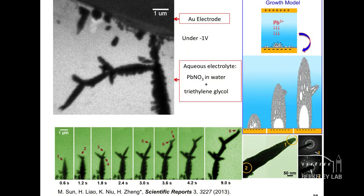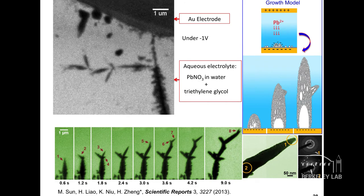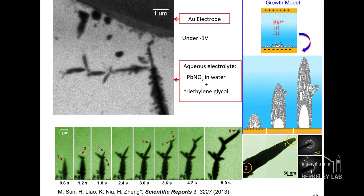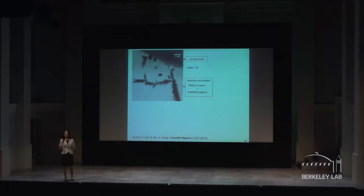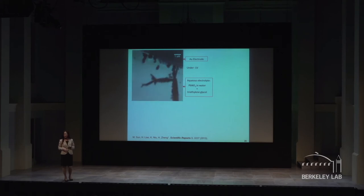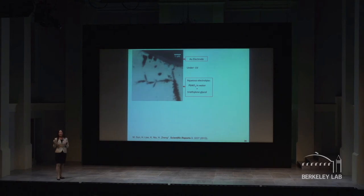As we're all familiar with the problem — as your cell phone ages, the battery does not take a charge as well. Here is an example: we can image the formation of dendrites during charge and discharge. This formation of dendrites damages the battery. If we understand them better, we can make better batteries.